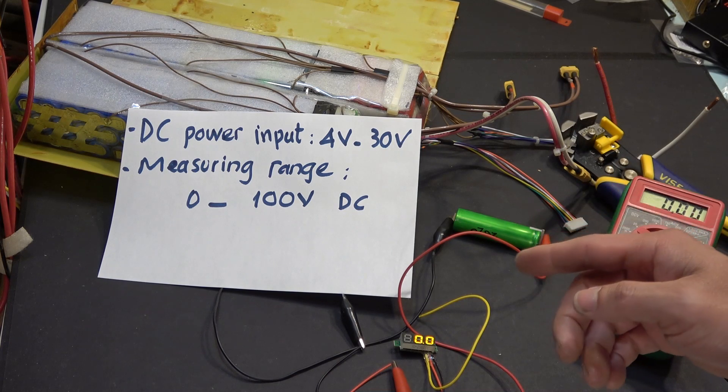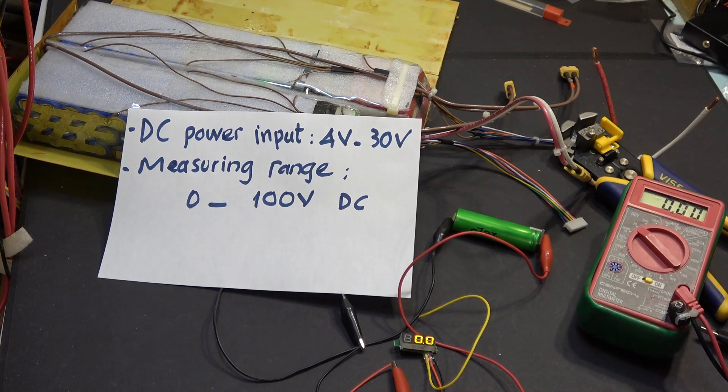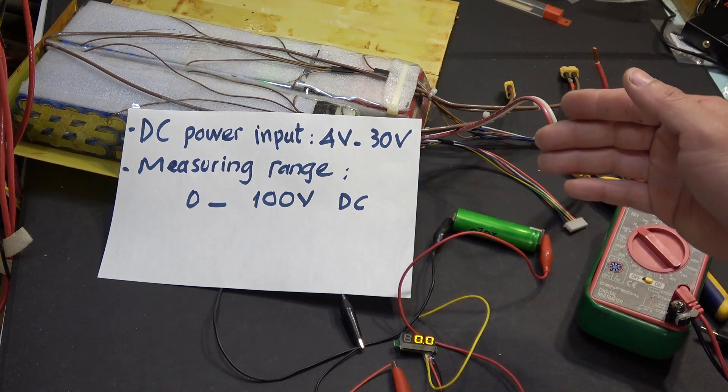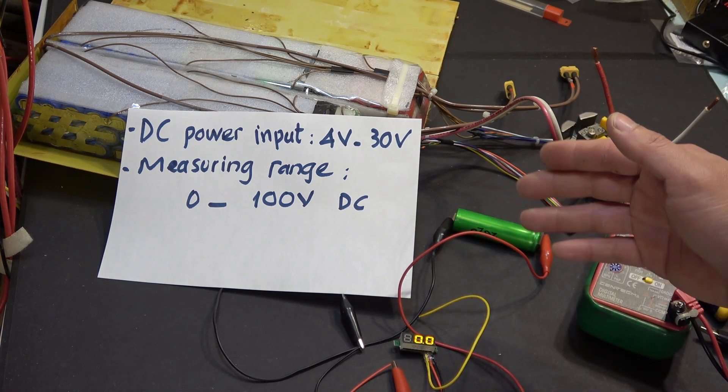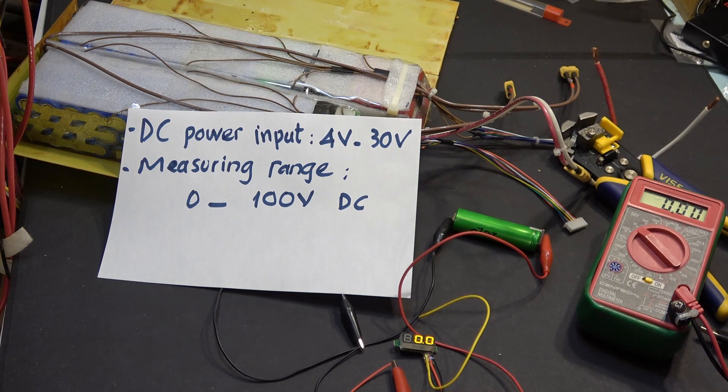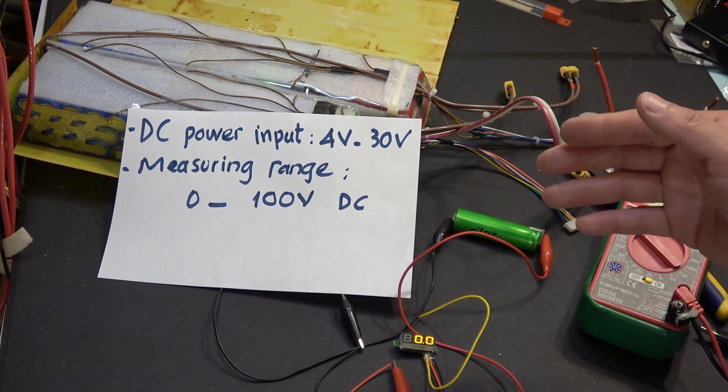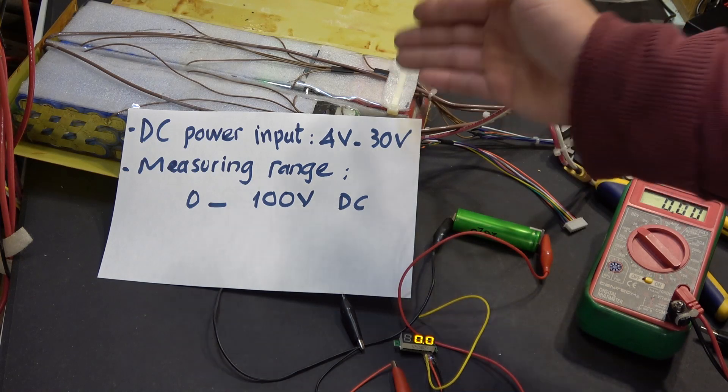So over here we got three wires: yellow, red, and black. Black wire is common ground for both the monitoring battery and the power source. The red wire will go to the power source and the yellow wire will go to the battery you want to monitor.